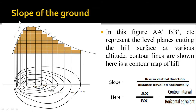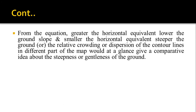The distance traveled horizontally is referred to as the horizontal equivalent. If you know the contour interval and measure the horizontal equivalent, you can calculate the actual slope using this formula. From the equation, the contour interval is the numerator and the horizontal equivalent is the denominator. The greater the horizontal equivalent, the lower the ground slope; and the smaller the horizontal equivalent, the steeper the ground slope. So horizontal equivalent is inversely proportional to slope.